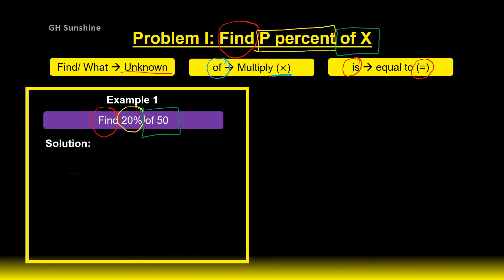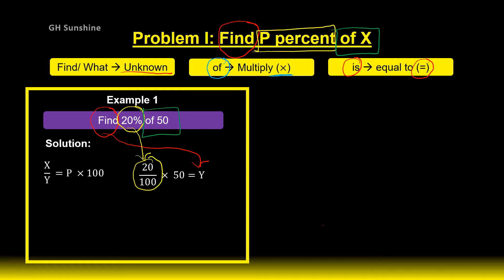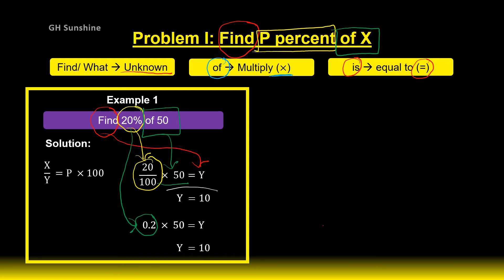Back to Example 1. Using this basic formula: 20 over 100 times 50 equals Y. Y is the unknown based on the word 'find.' 20 percent is converted to fraction form, or you can use decimal form which is 0.2. Then 'of 50' means times 50. Calculate Y directly — Y equals 10. You can convert from percentage form to decimal form: 0.2 times 50 equals Y. Same answer: Y equals 10.